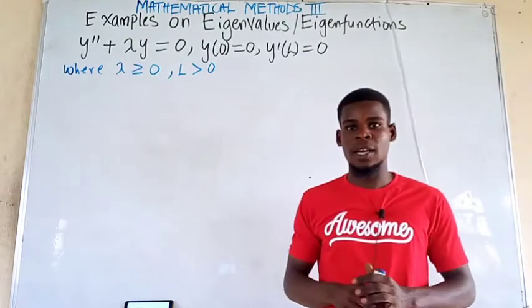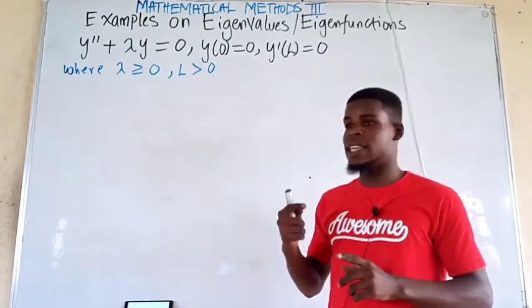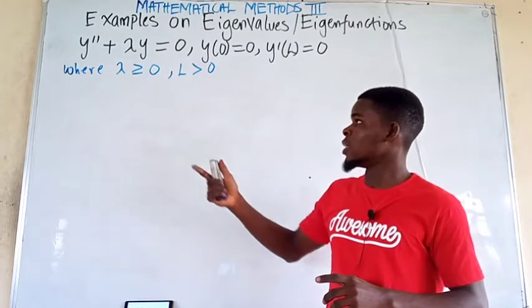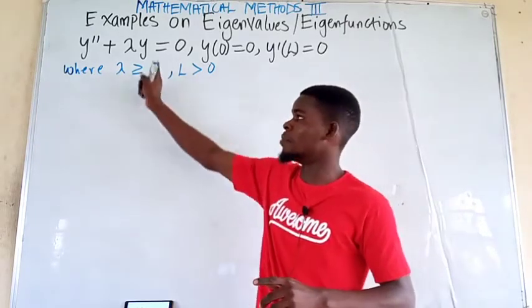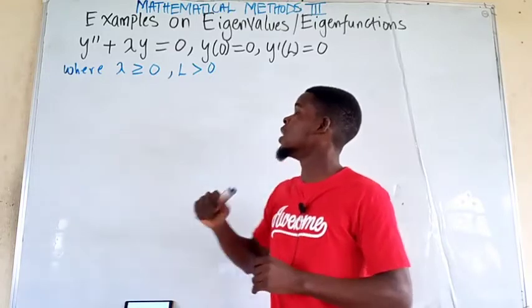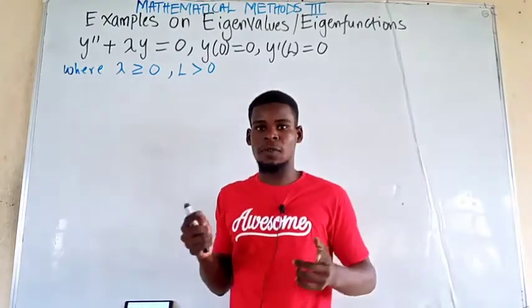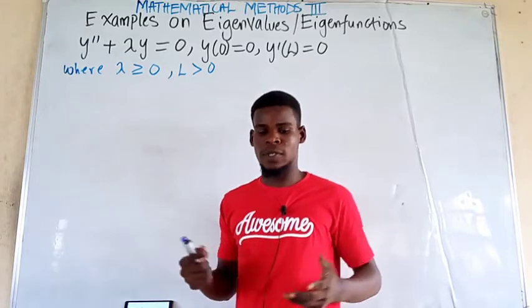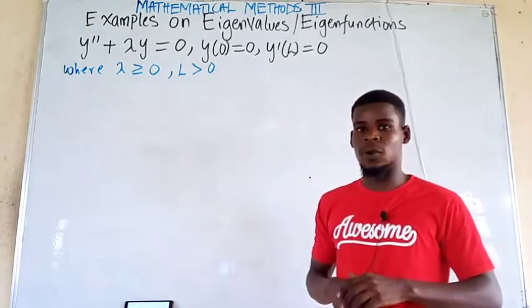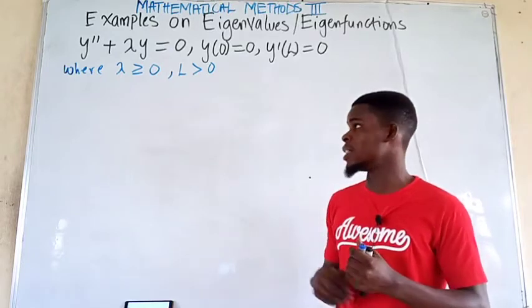Lambda can be any real number, but in this particular case, if lambda is less than 0, that will give us a trivial solution, and as such lambda will not be an eigenvalue of this problem. So there is no point considering the negative case here.